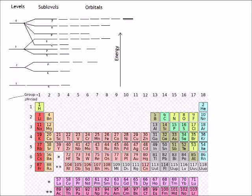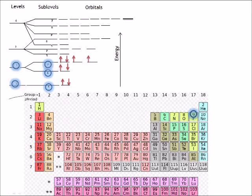Fluorine has nine protons in the nucleus and therefore nine electrons. The electron configuration is 1s2 2s2 2p5, and the second energy level is the valence level.